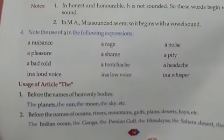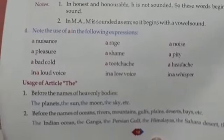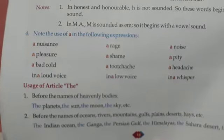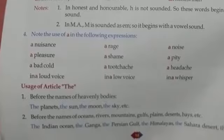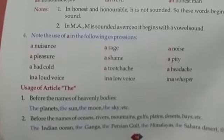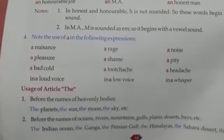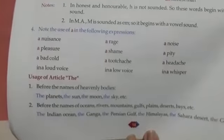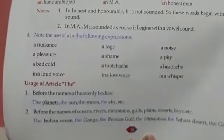We have to use the article 'the' before the names of heavenly bodies like the planets, the sun, the moon, the sky, etc.